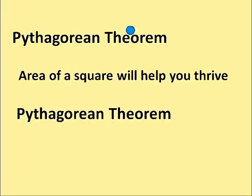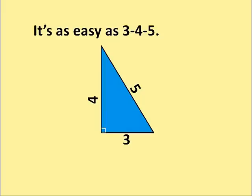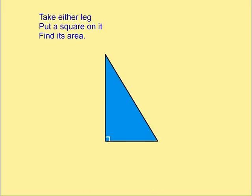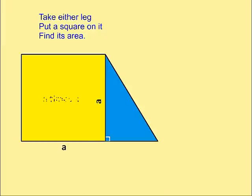Pythagorean Theorem, area of a square will help you thrive. Pythagorean Theorem, it's as easy as 3, 4, 5. Take your leg, put a square on it, find its area.